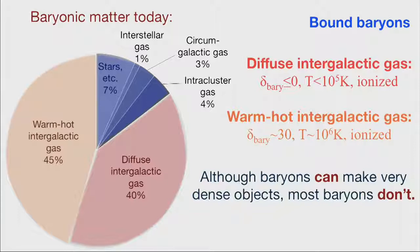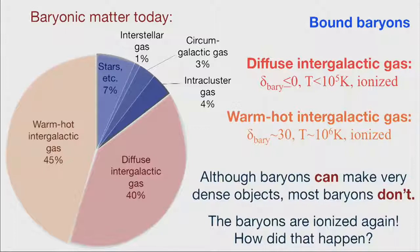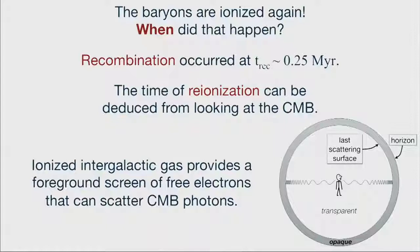The second lesson: the baryons are ionized again. Notice the two big wedges of intergalactic gas are highly ionized, and much of the interstellar, circumgalactic, and intracluster gas is ionized too. So I went to all this trouble to describe recombination when the universe was about a quarter of a million years old, but it's all ionized again. How did that happen, and when did reionization occur?